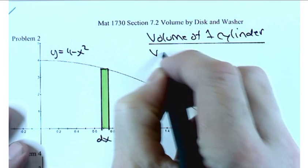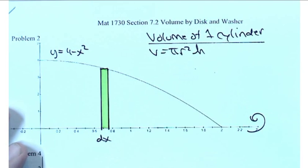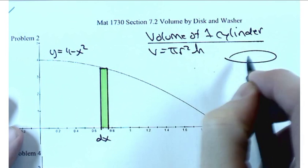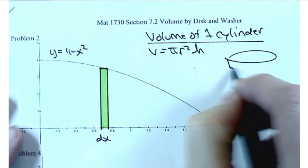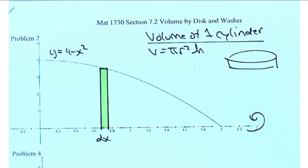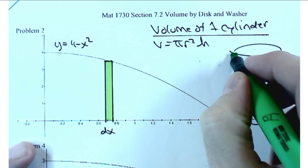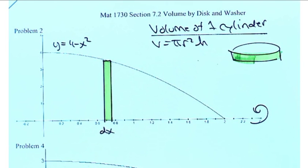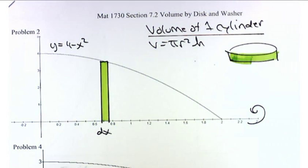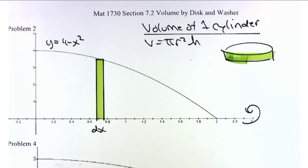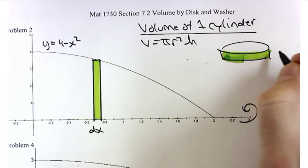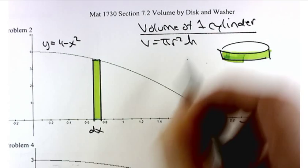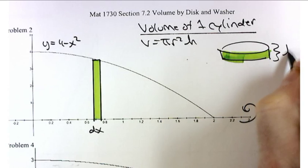The volume of one cylinder is pi r squared times h. Let's draw a really short cylinder. The thickness of that cylinder is really the height, so h is going to be DX.